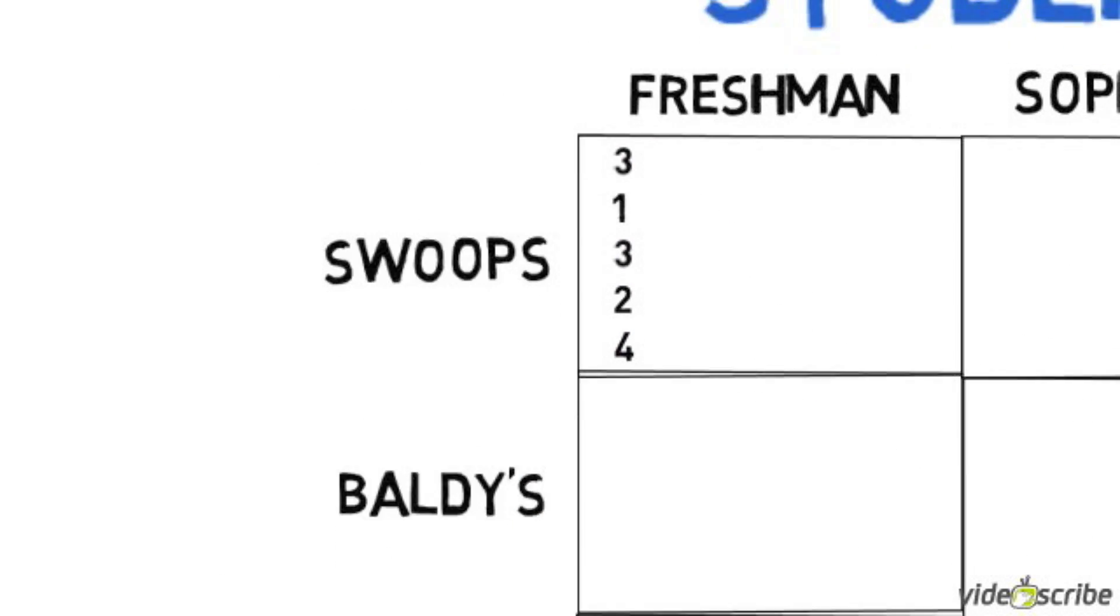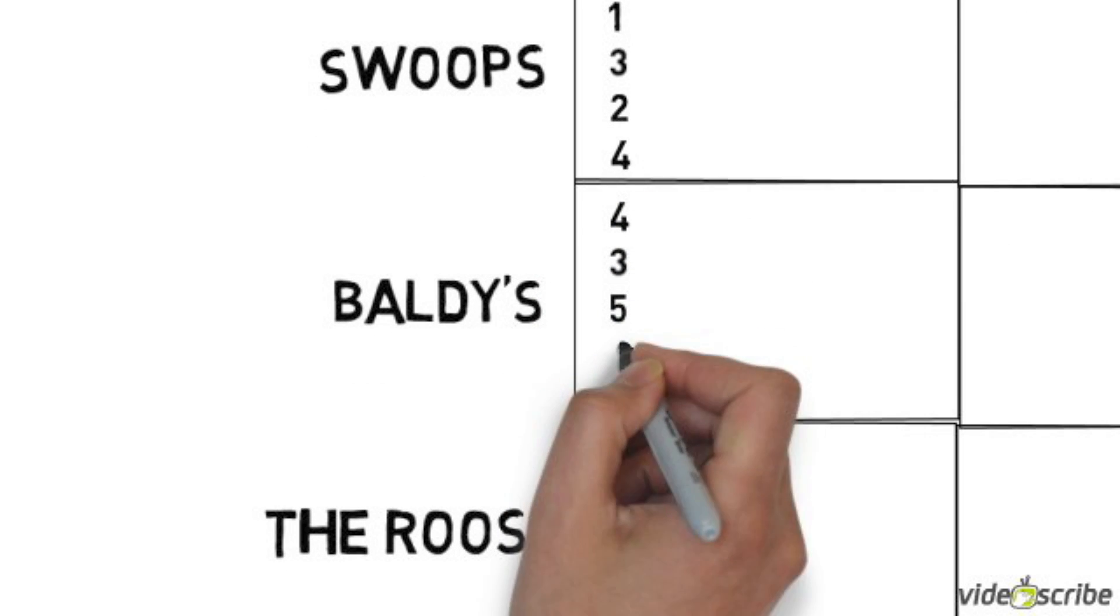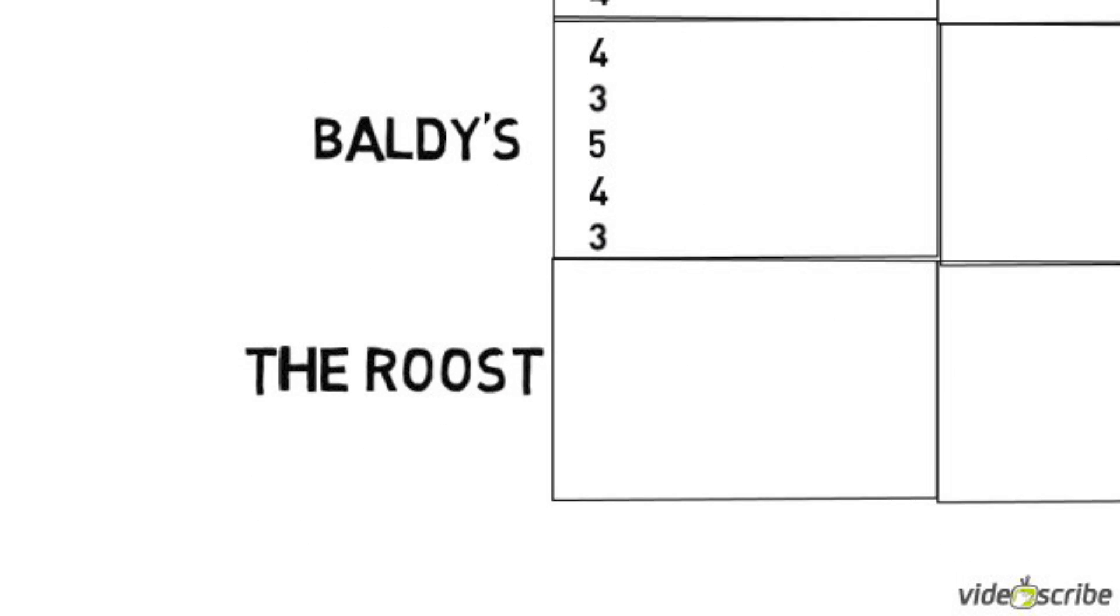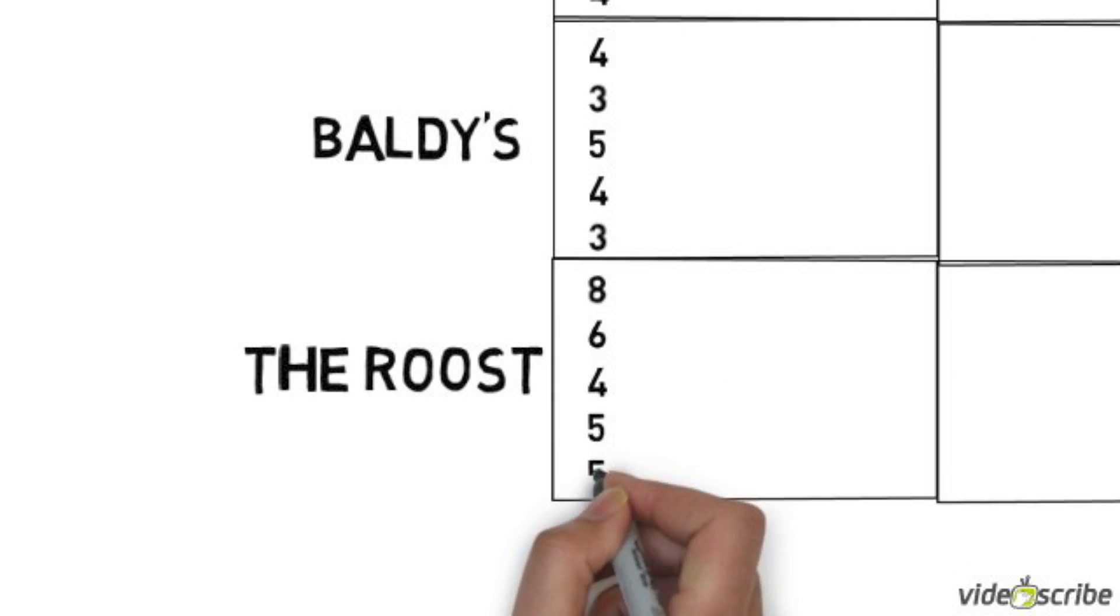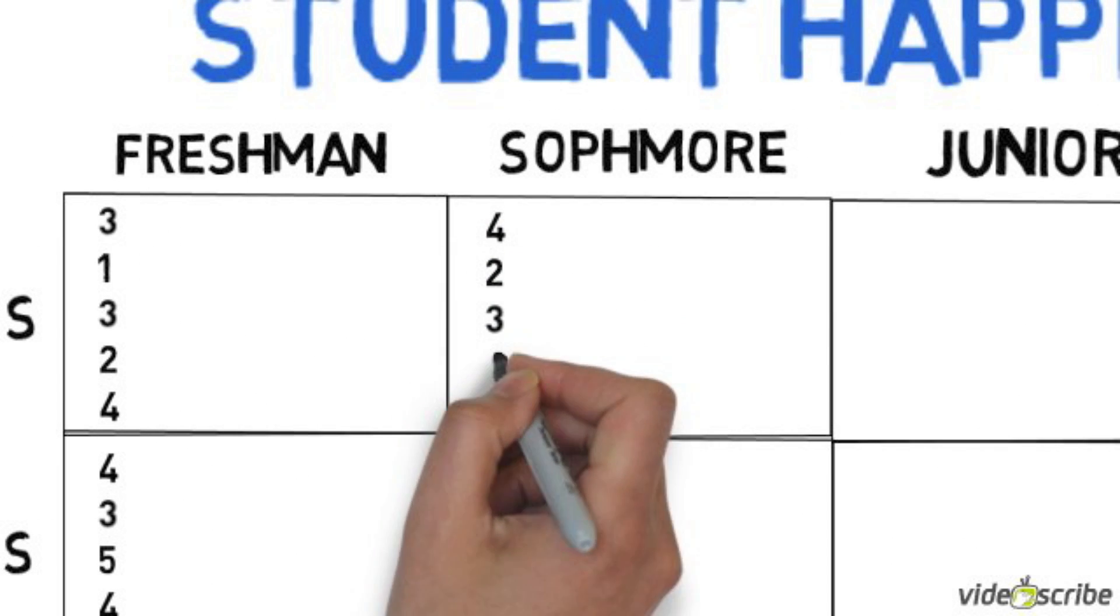Now we're going to enter the participants' scores into each cell, whether they're a freshman, sophomore, junior, or senior, and based on where they ate: Swoops, Baldy's, or the Roost.